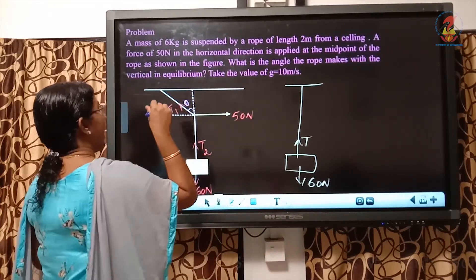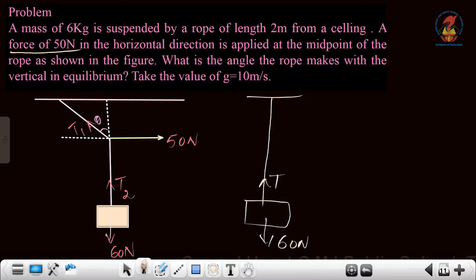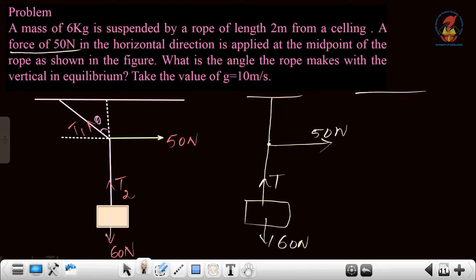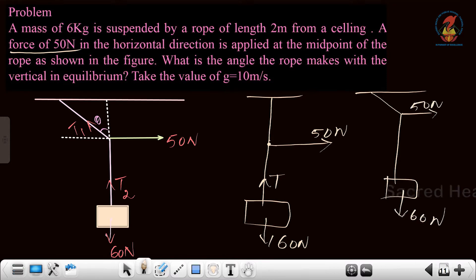At the center of the rope, a force of 50 Newton is applied along the horizontal direction. If this is the center of the rope, someone applied a force of 50 Newton and pulled it in the horizontal direction. So the rope will become bent. The weight of 60 Newton is acting downward and 50 Newton is acting in the horizontal direction. You are asked to find out what angle the rope makes with the vertical in equilibrium.